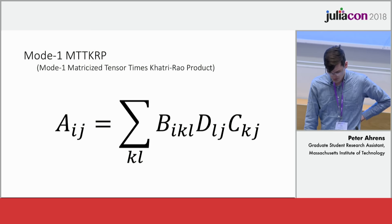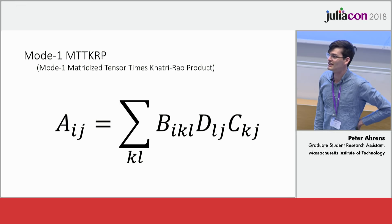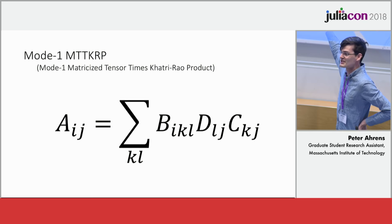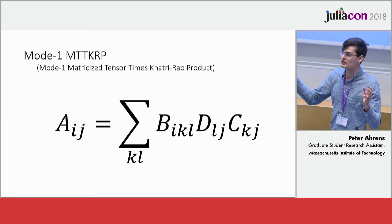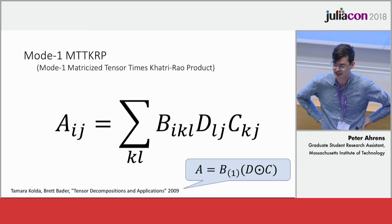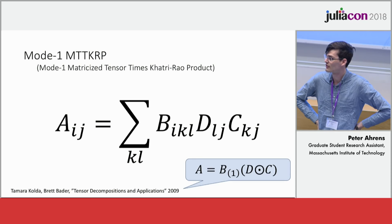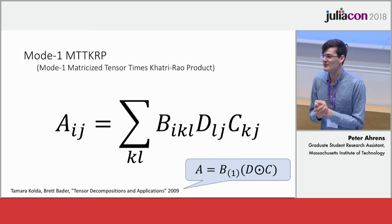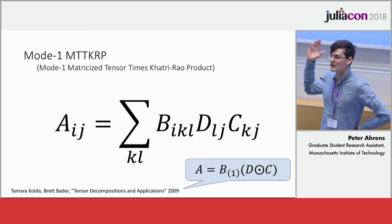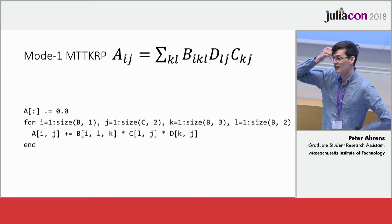Here's a kernel — MTTKRP, the matricized tensor times Khatri-Rao product. This seems like a crazy kernel, but it's actually really important. It's the solution to a least squares problem in tensor factorization. If you want to factor a tensor into a bunch of rank-one tensors, you might have to use this kernel. I ask you, how would you implement this in Julia? You might use einsum.jl — that would be the smart thing. But if you weren't going to use index notation, you'd be using a set of for loops.